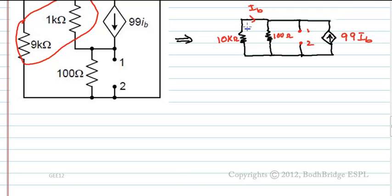Let us take the voltage here as V. So here also it becomes V. And apply a current of 1 ampere. So the current through this branch is 1 plus 99 IB.